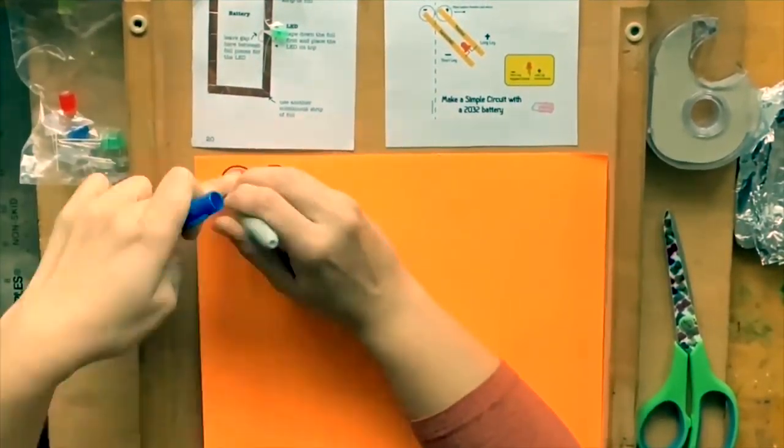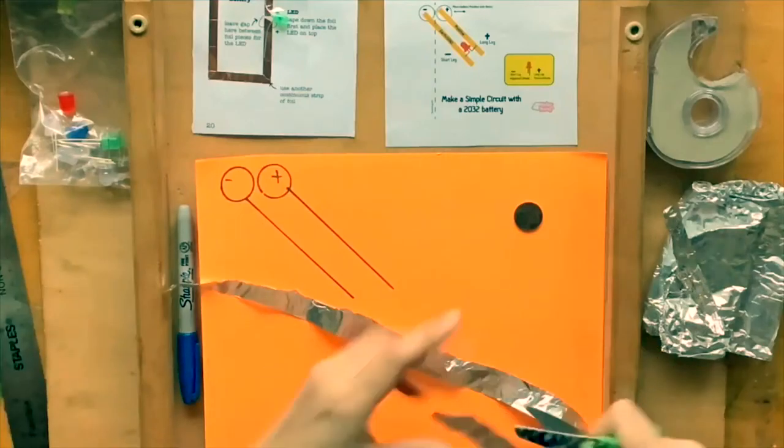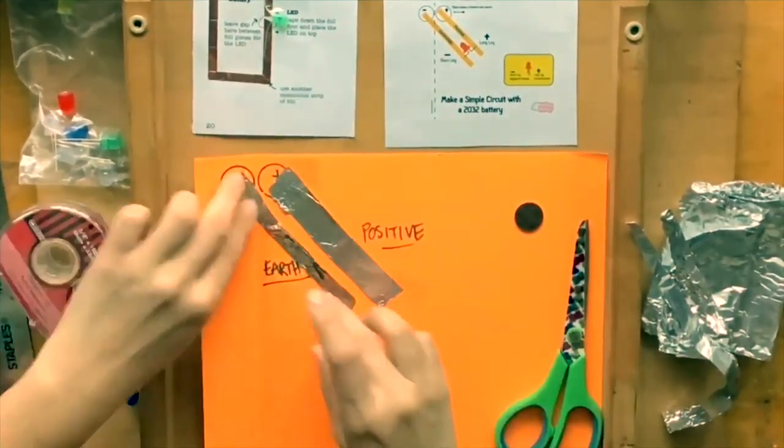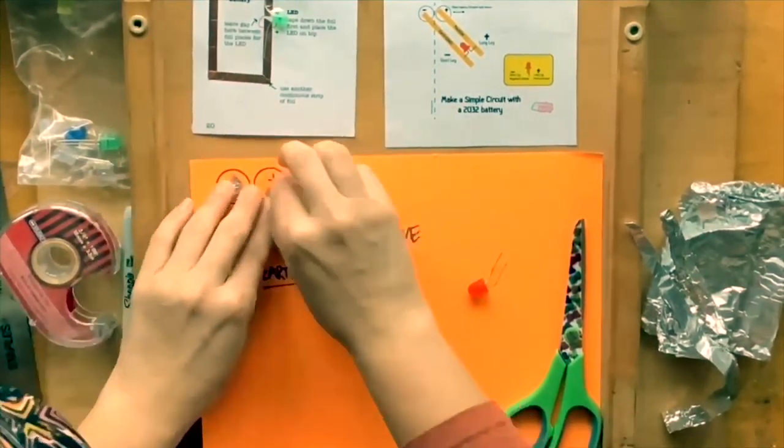Let's remember how our basic simple circuit works. We've got a positive and negative, or in this case also Earth. We've got an energy source and something that we're going to power up.